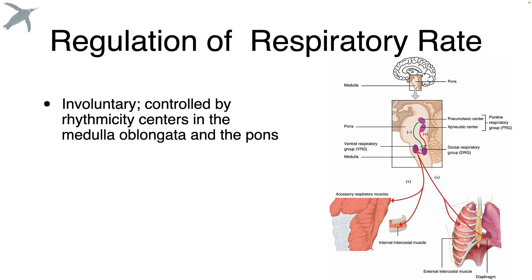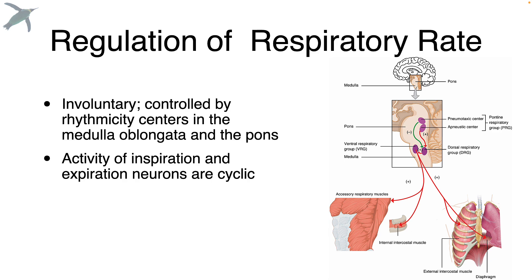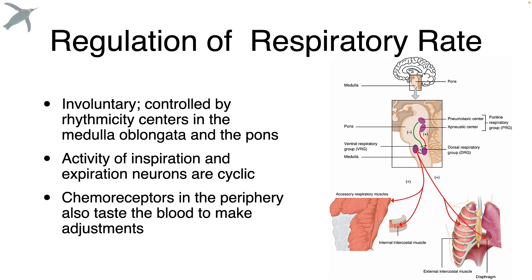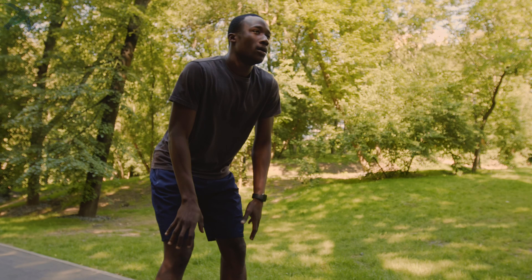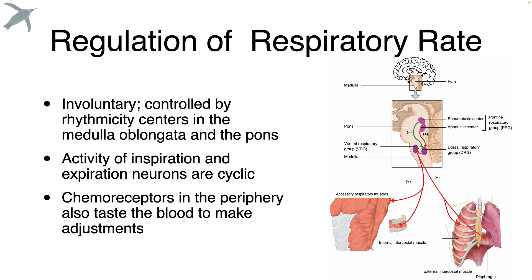What causes the diaphragm, the intercostals, and other muscles to do this is involuntary. It's controlled by what are called rhythmicity centers in the brainstem — neurons that fire in a cyclic manner. The rate and depth of your breathing can be modulated as chemoreceptors taste the blood, so that as the oxygen needs of the body increase — for example, during exercise — the rate and depth of your breathing will also increase.